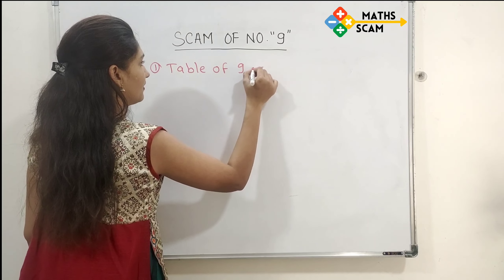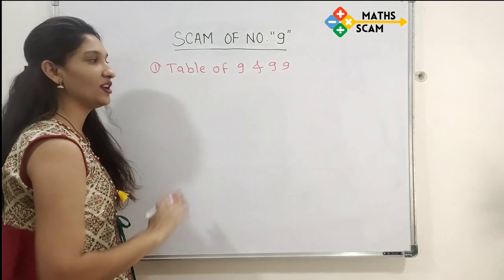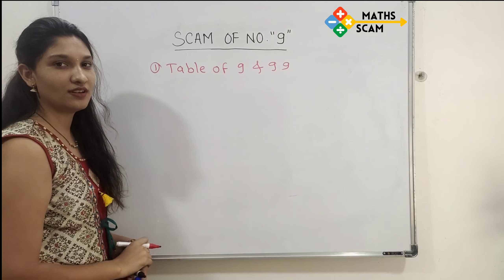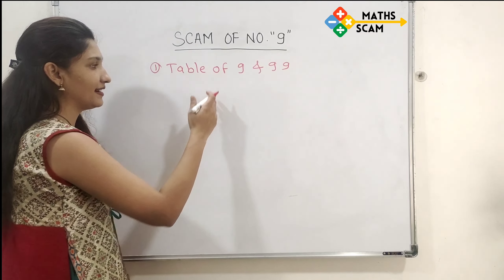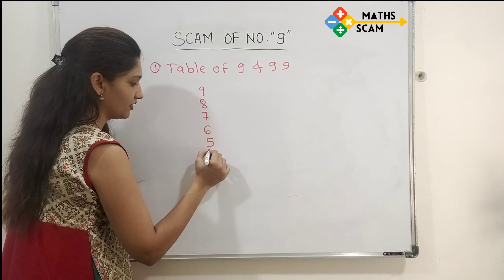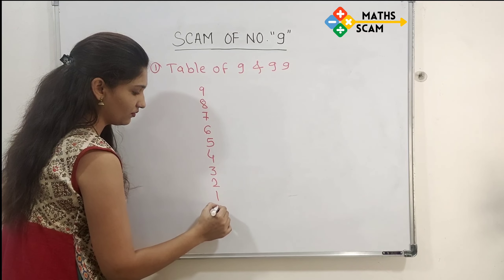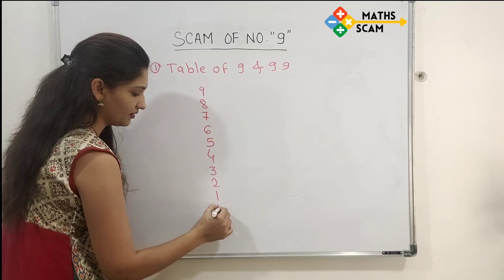In this we will see the table of 9 and 99. How to write the table of 9? Many of us know how to write it. So write 9 to 0 in descending order on the right side: 9, 8, 7, 6, 5, 4, 3, 2, 1, 0.